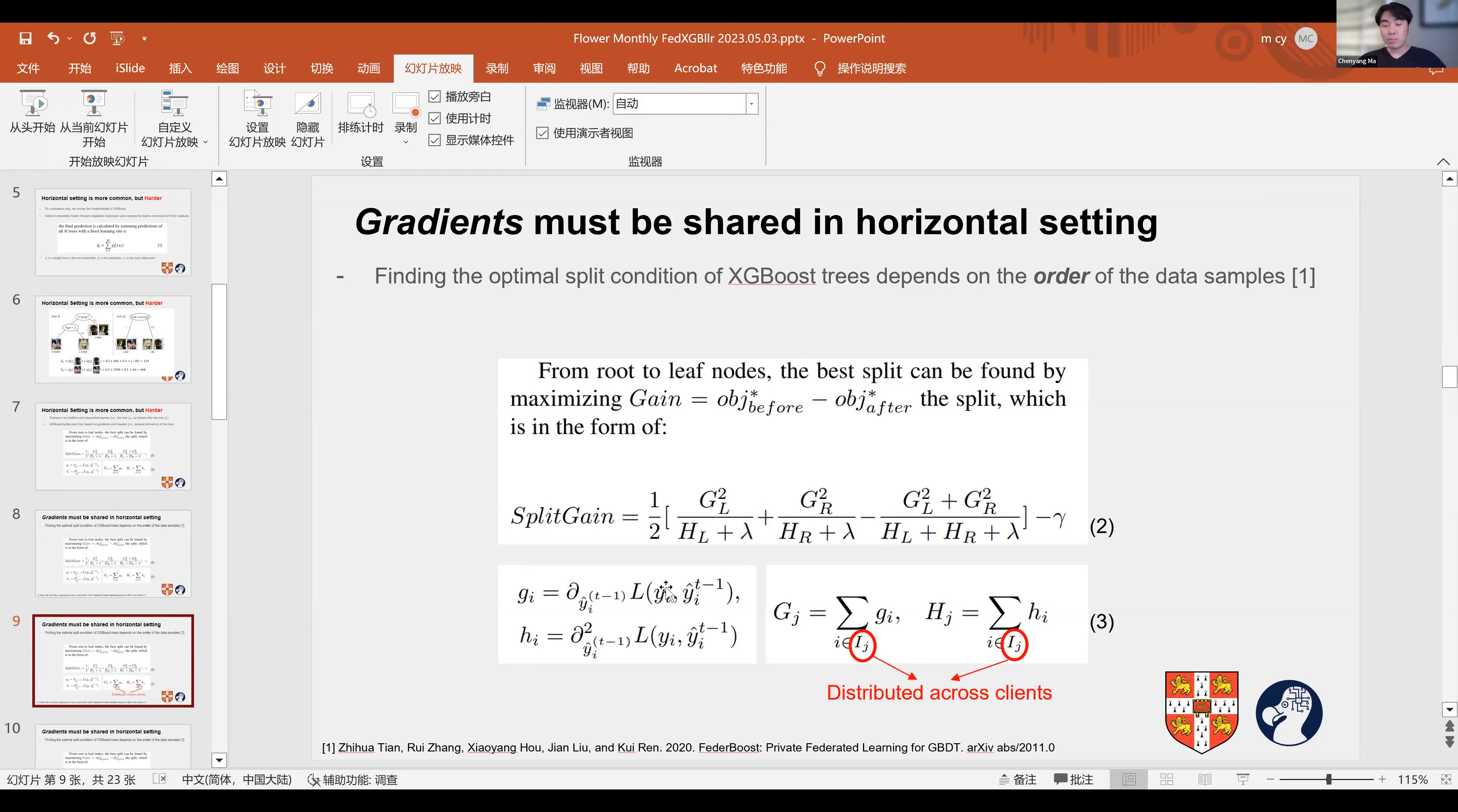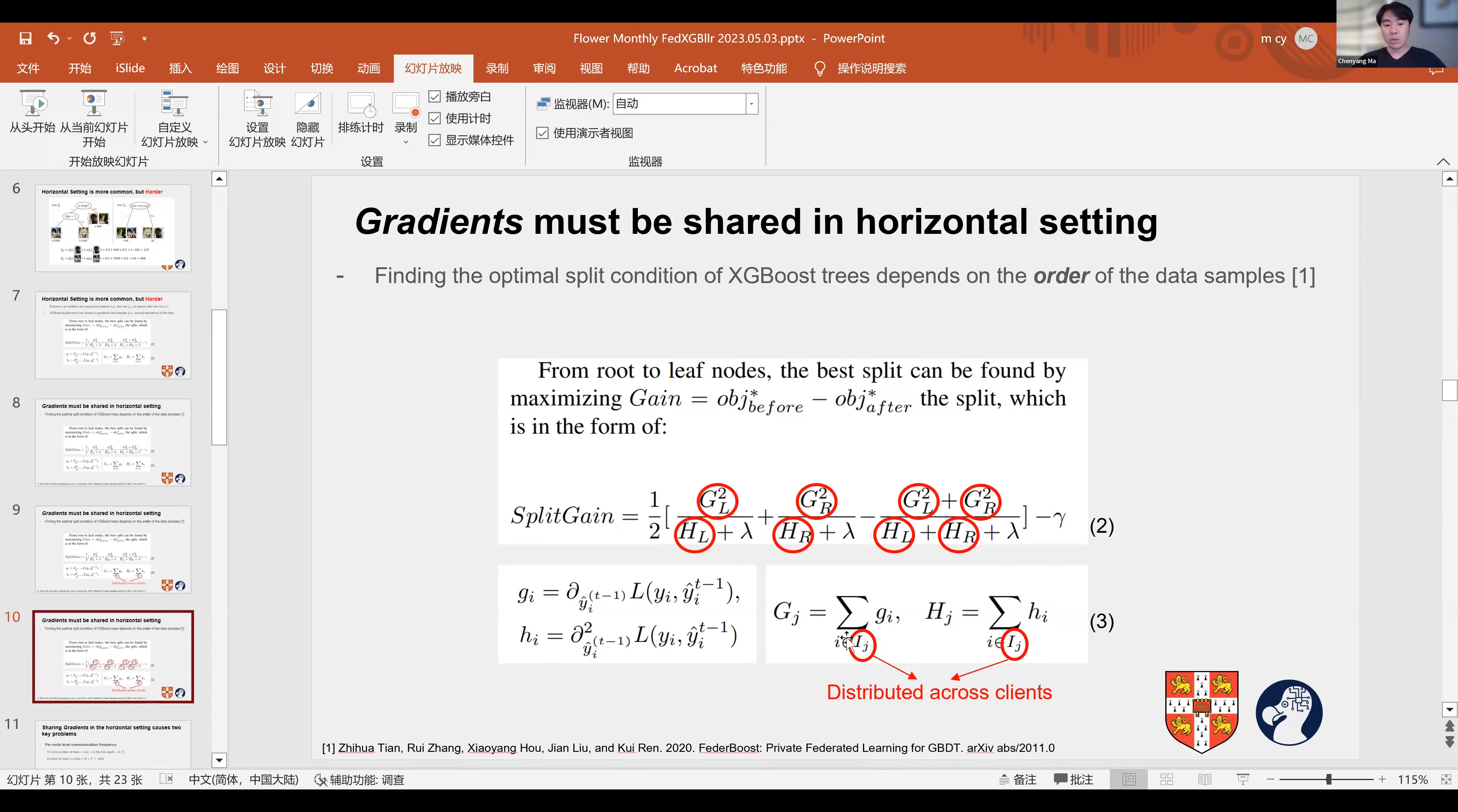Since the sample IDs are different across all clients in the horizontal setting, in other words, the instance set is decentralized across all clients, at every splitting point each client needs to transmit the gradient, Hessians, and sample states based on the feature constraints to the server to find the optimal splitting condition.